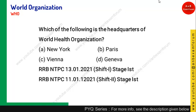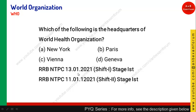Which of the following is the headquarter of WHO? This was asked in different shifts on different days in NTPC. For all world organizations, you should at least know the headquarters. You might be confused between New York and Geneva, as most organizations are at either New York or Geneva, and a few are at Paris or Vienna. For this question, the answer is Geneva, which is in Switzerland, a country in Europe. Option B is correct.